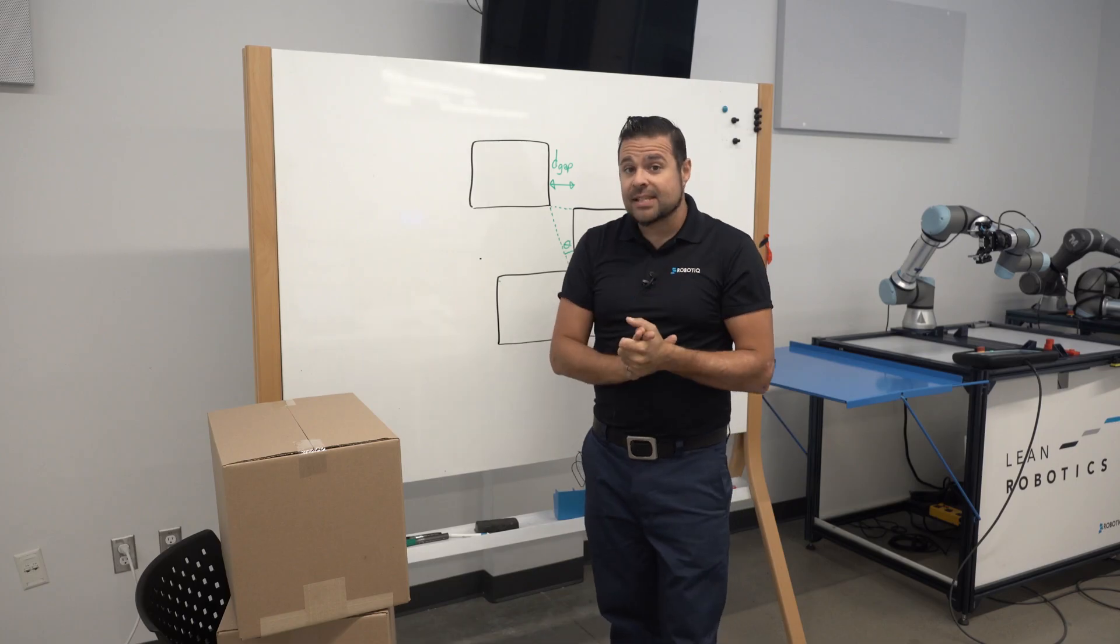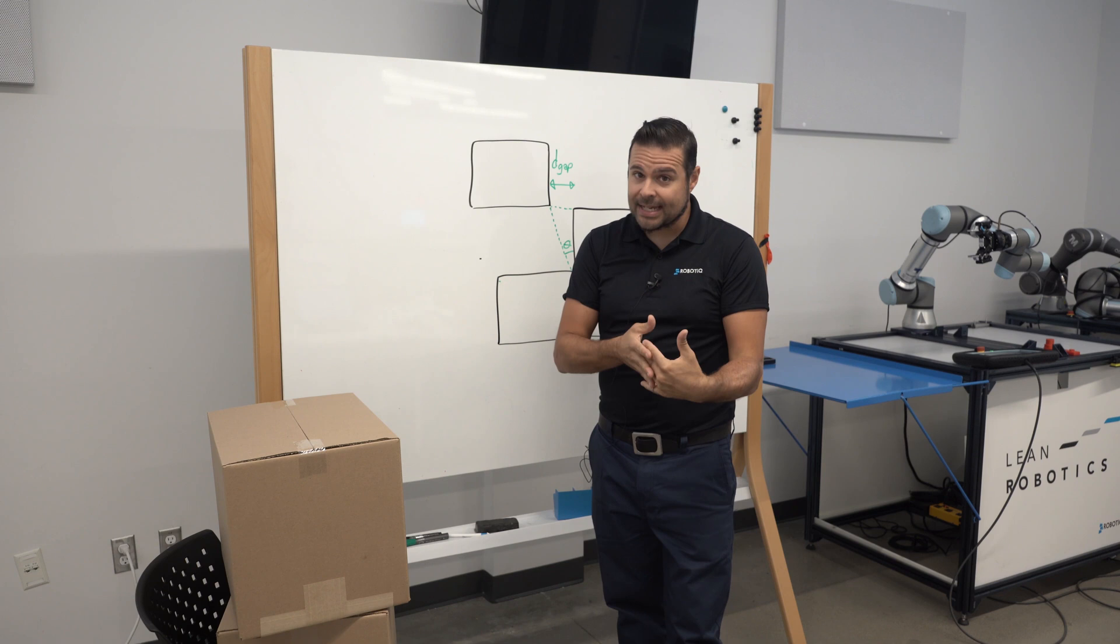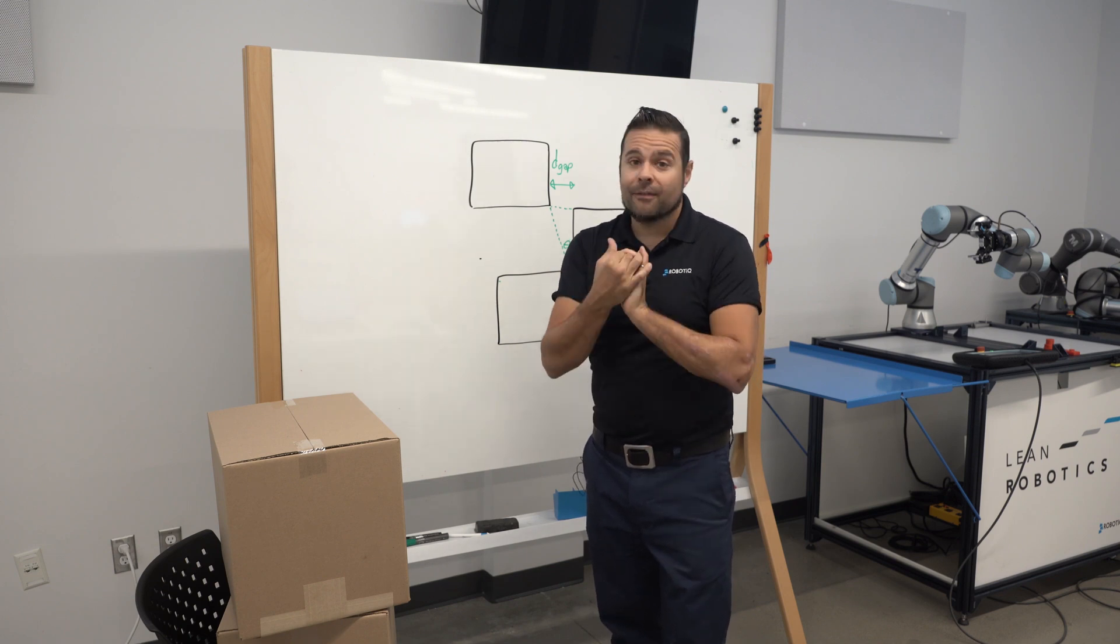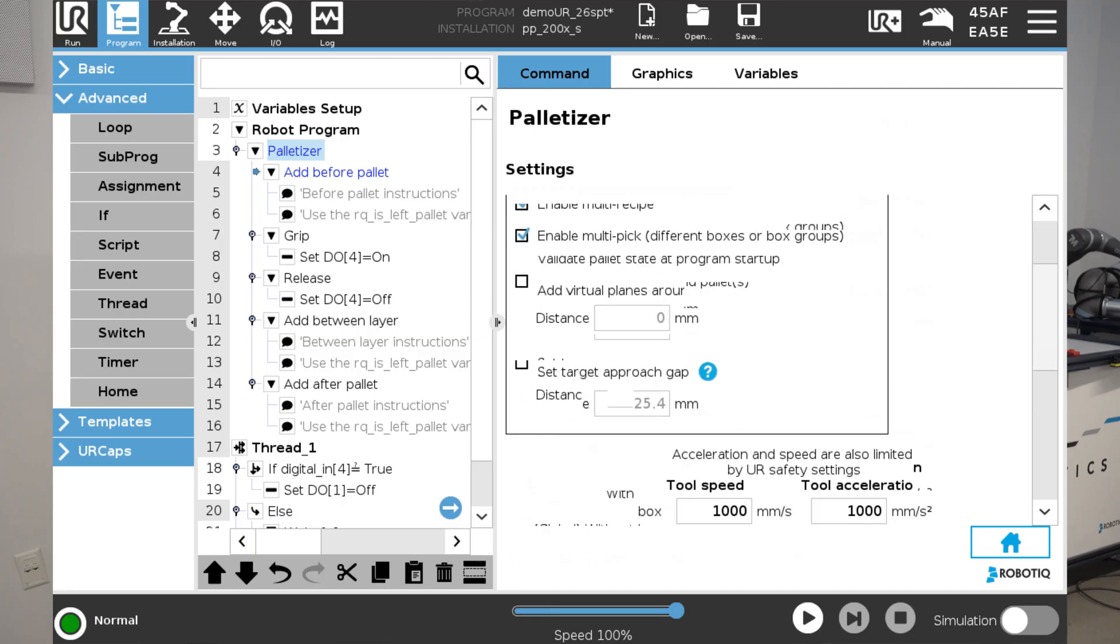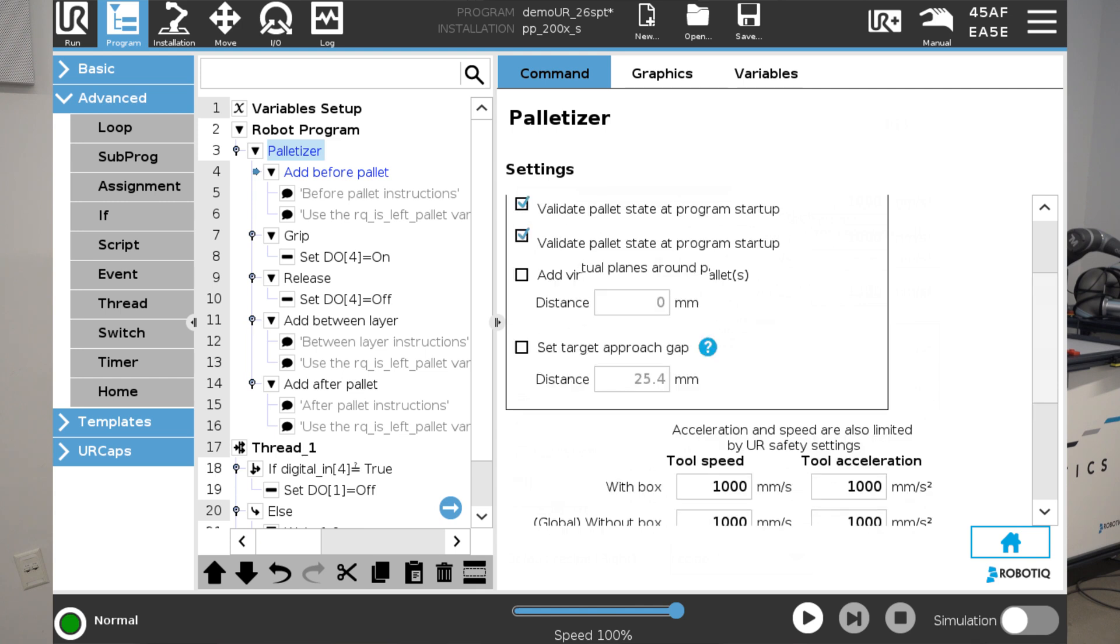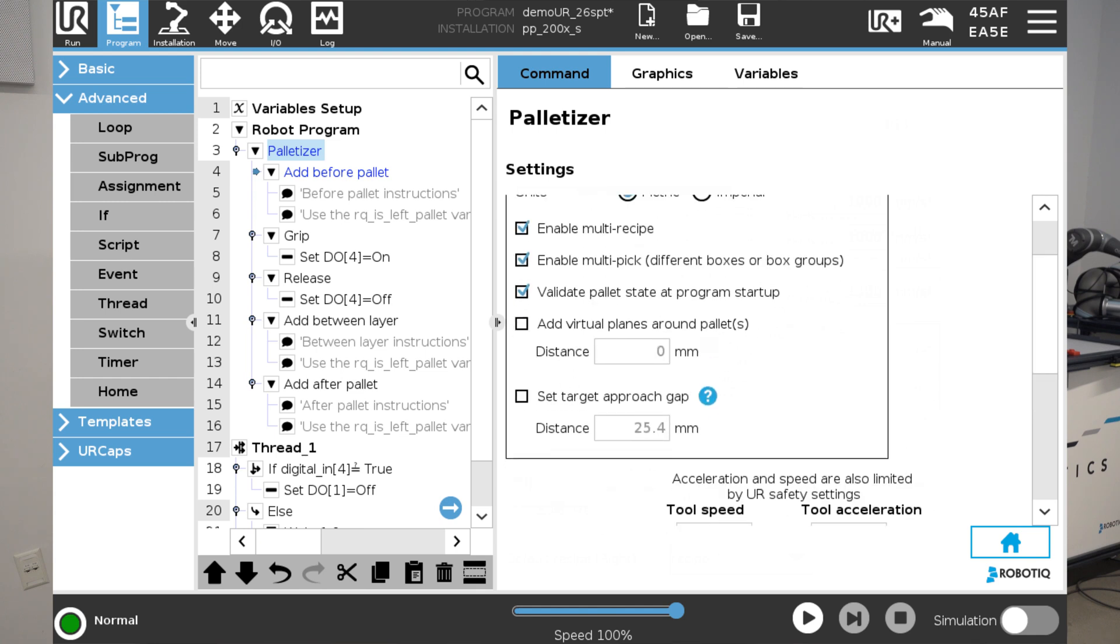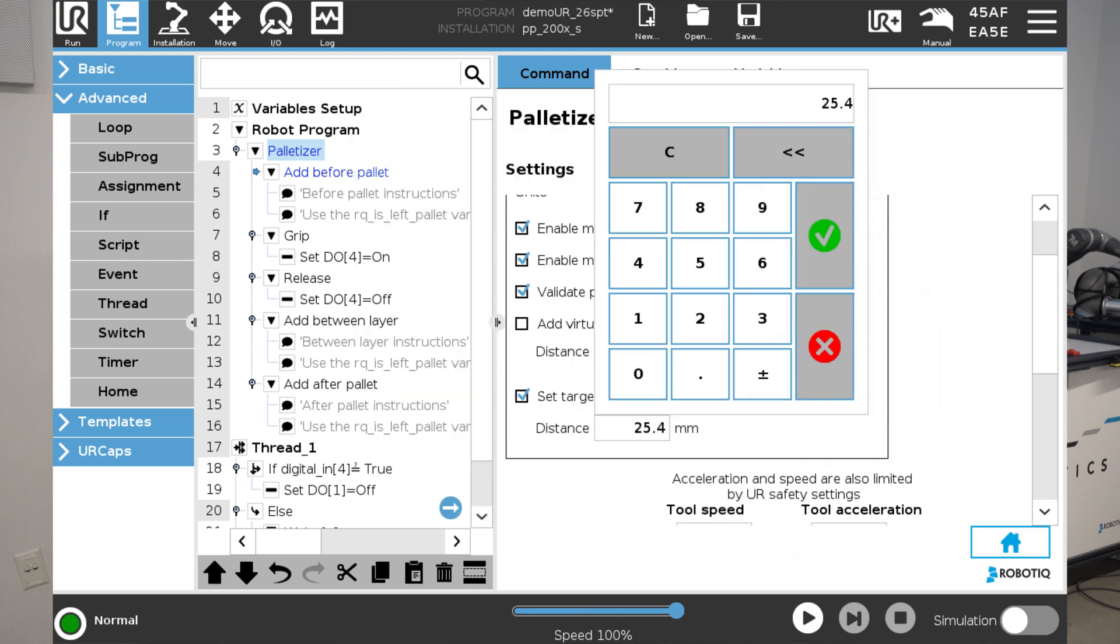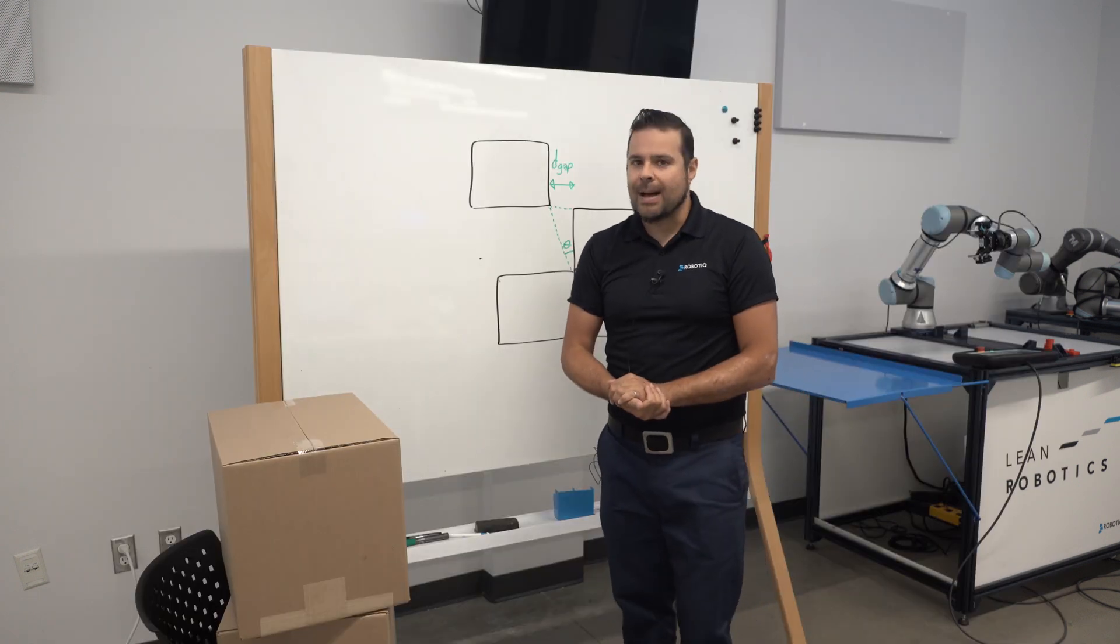This option is called set target gap. You will find it in the settings menu of the palletizer node, and you can enter an actual value in distance that you want to see between the coming boxes and the existing box on the pallet.